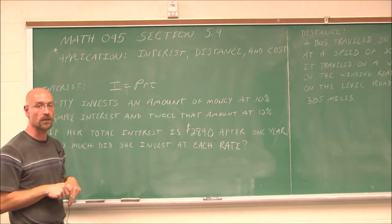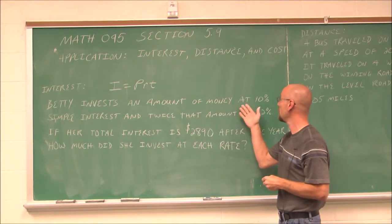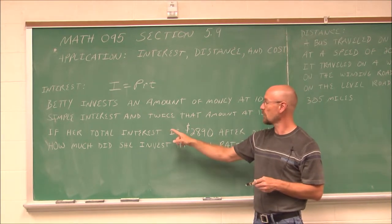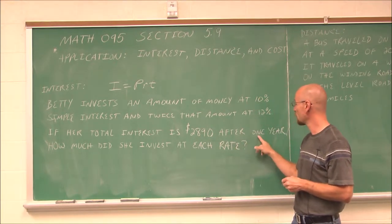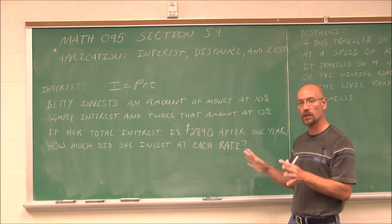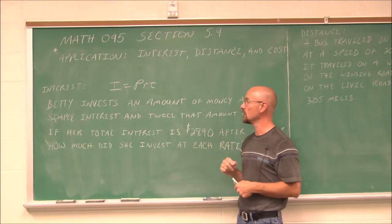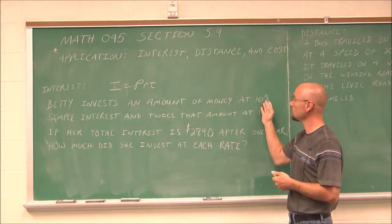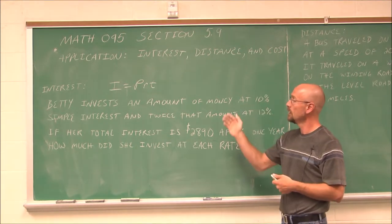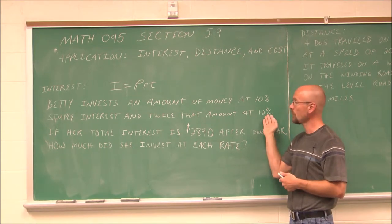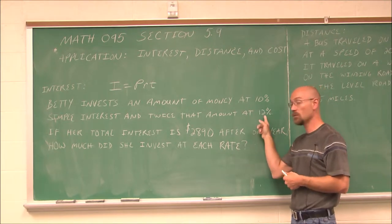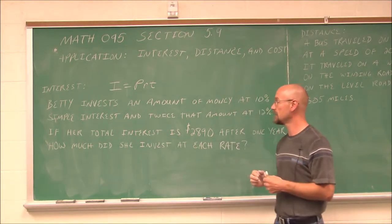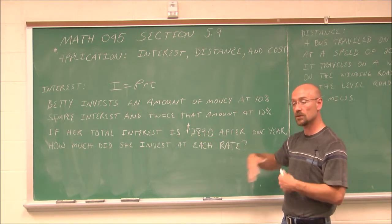We understand what these variables stand for. The problem says Betty invests an amount of money at 10% simple interest, and twice that amount at 12%. If her total interest is $2,890 after one year, how much did she invest at each rate? We read it to identify the given information: some money at 10%, twice that at 12%, total interest of $2,890, and time is one year.